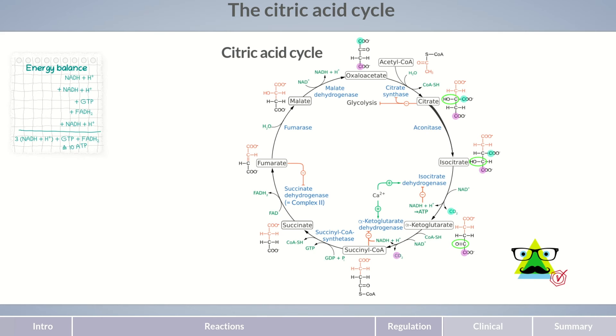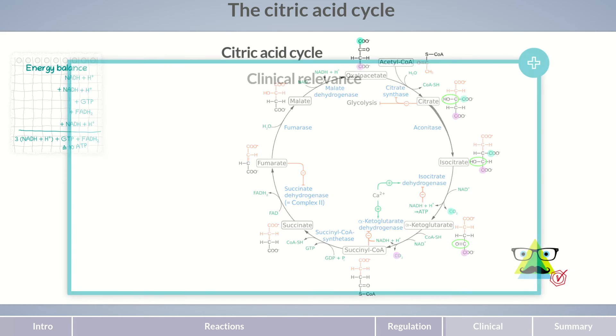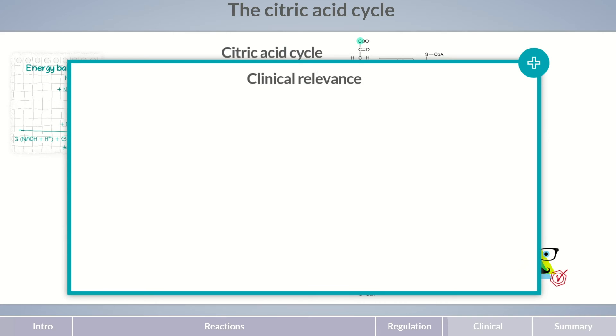As already discussed for glycolysis and beta-oxidation, pathological changes of central metabolic pathways are rare. This also applies to the citric acid cycle. Defects of the enzymes involved aren't really clinically relevant, in contrast to extreme metabolic states that affect the citric acid cycle on a regulatory level.